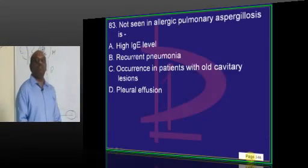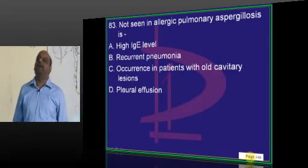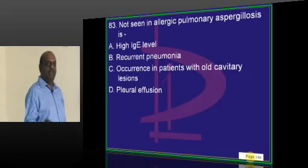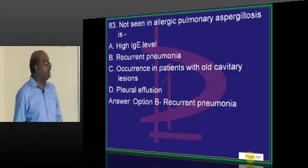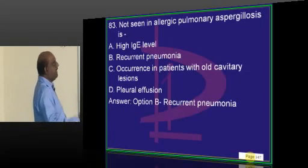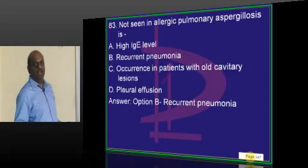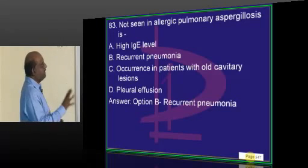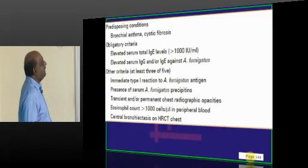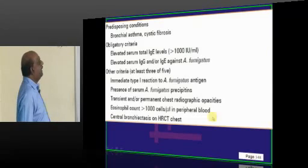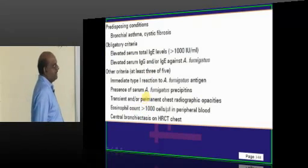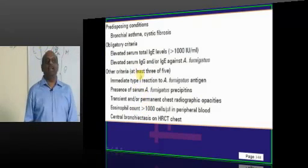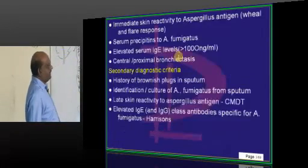For pulmonary aspergillosis, there are certain criteria to define a given person as having it. High IgE levels and cavitary lesions are among those criteria. However, recurrent pneumonia is not a part of the criteria. There are obligatory criteria and minor criteria to consider.